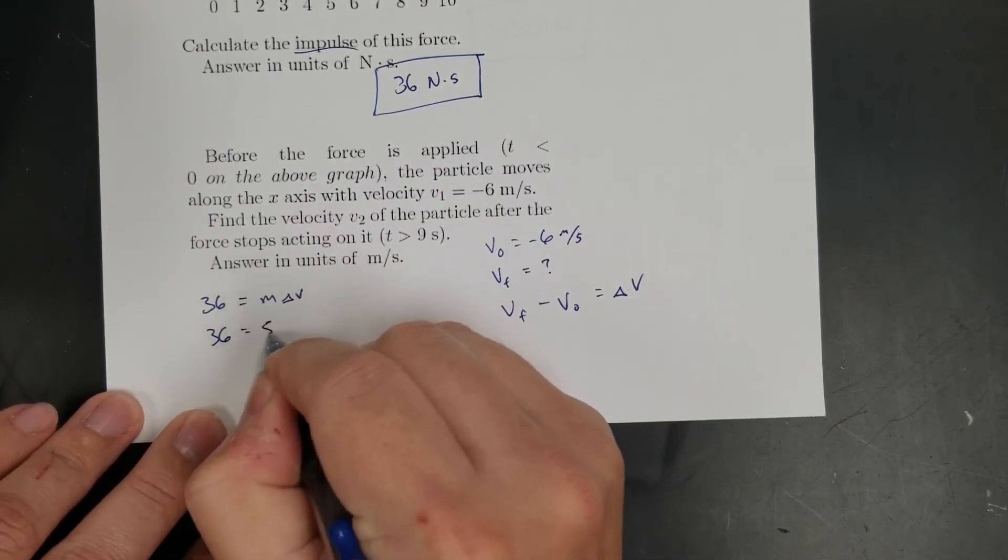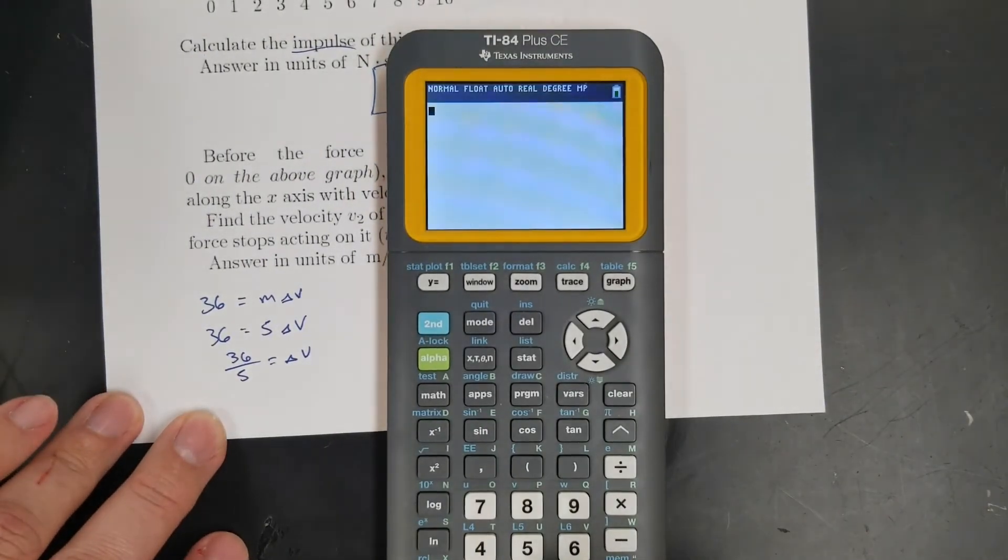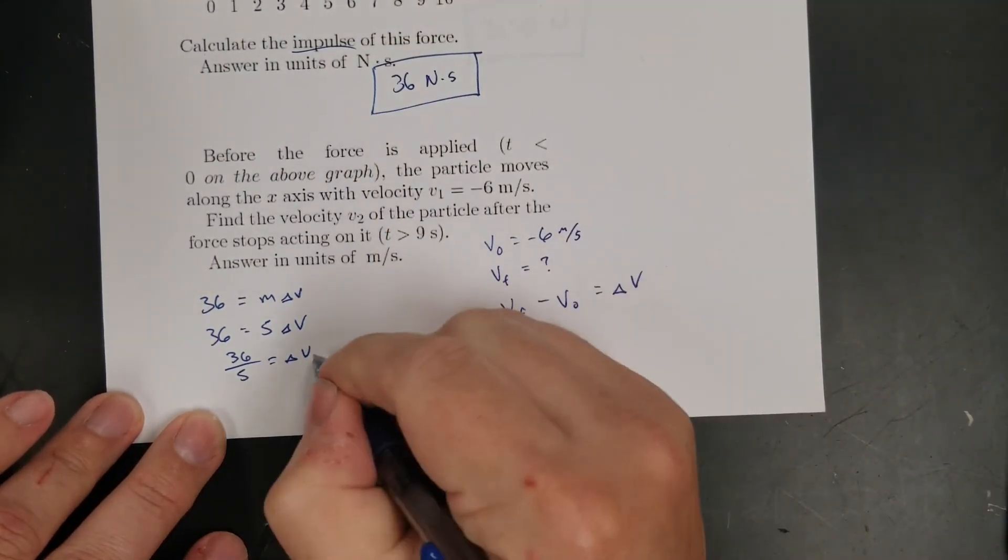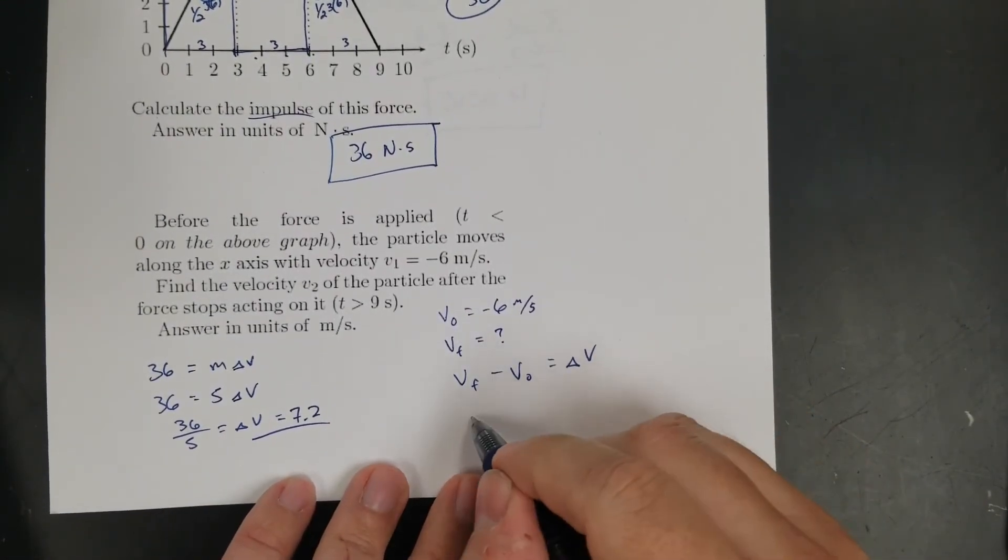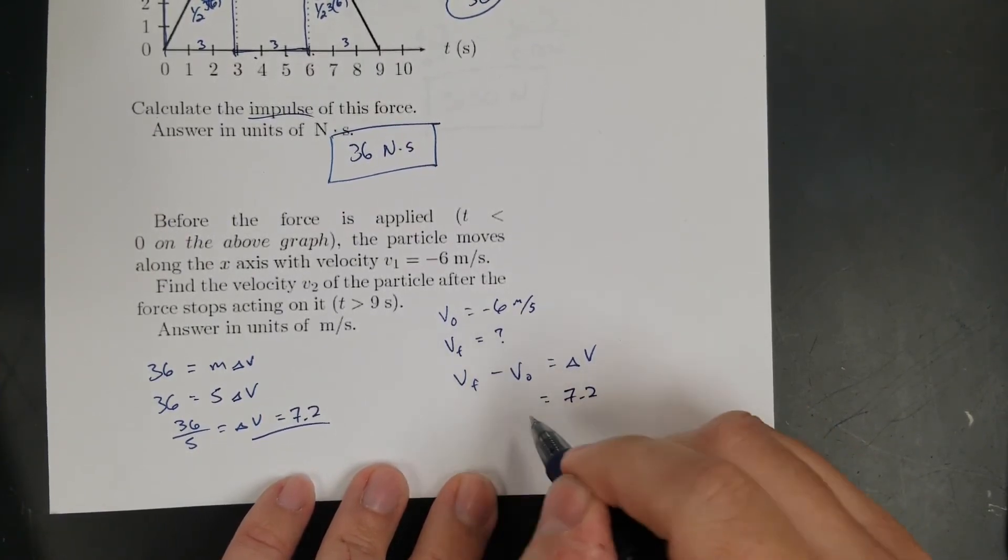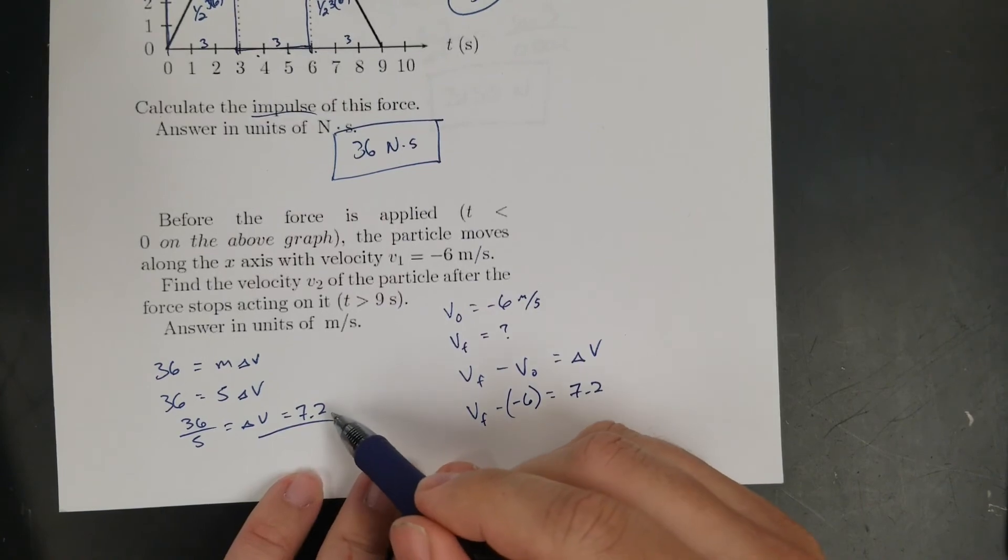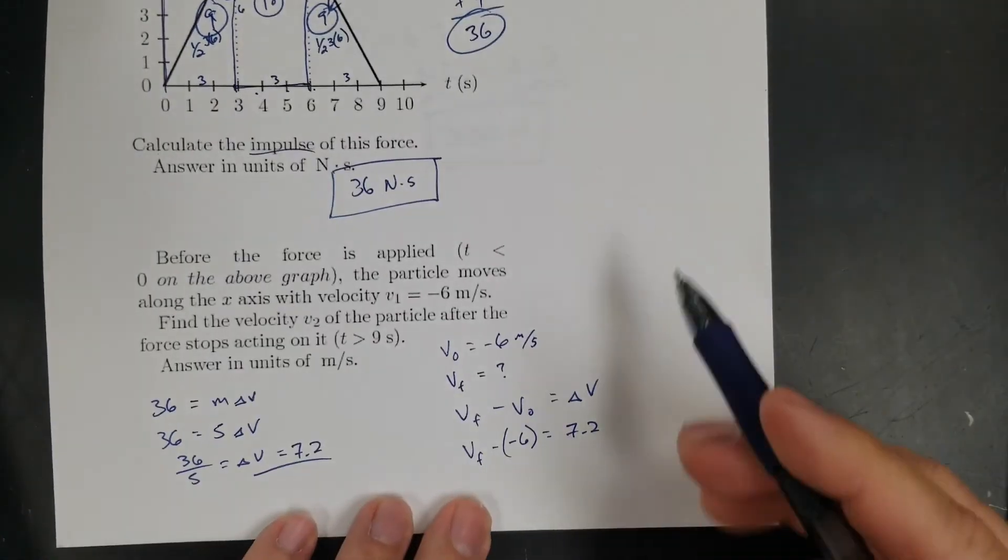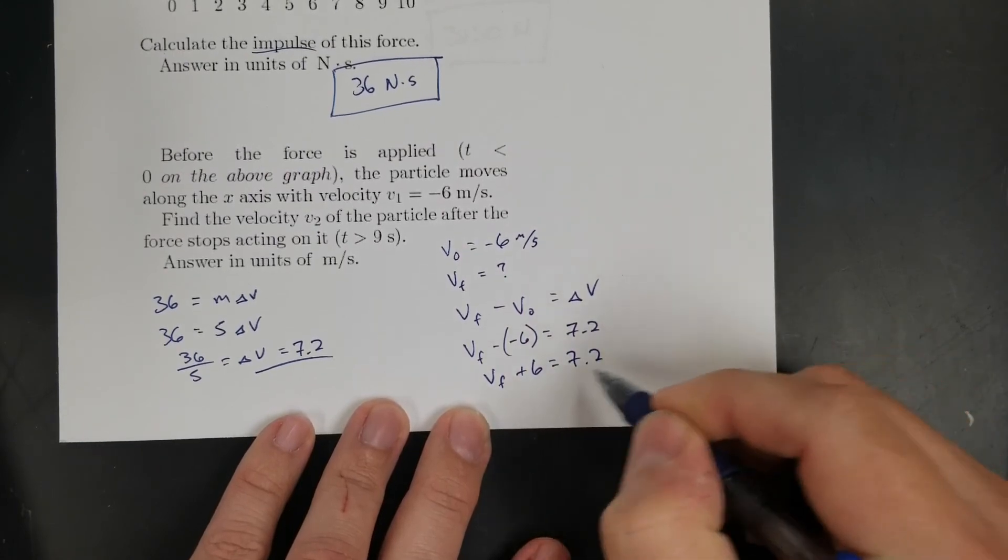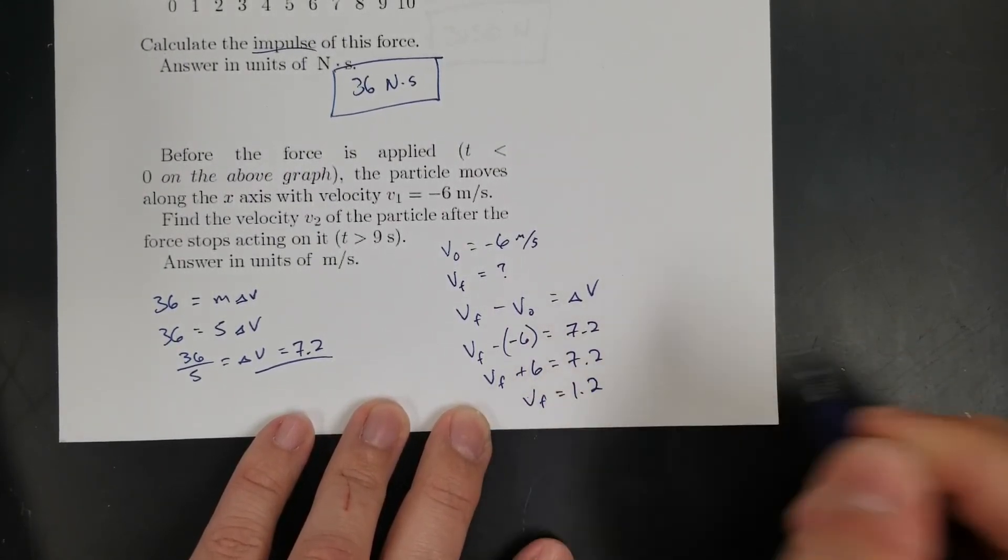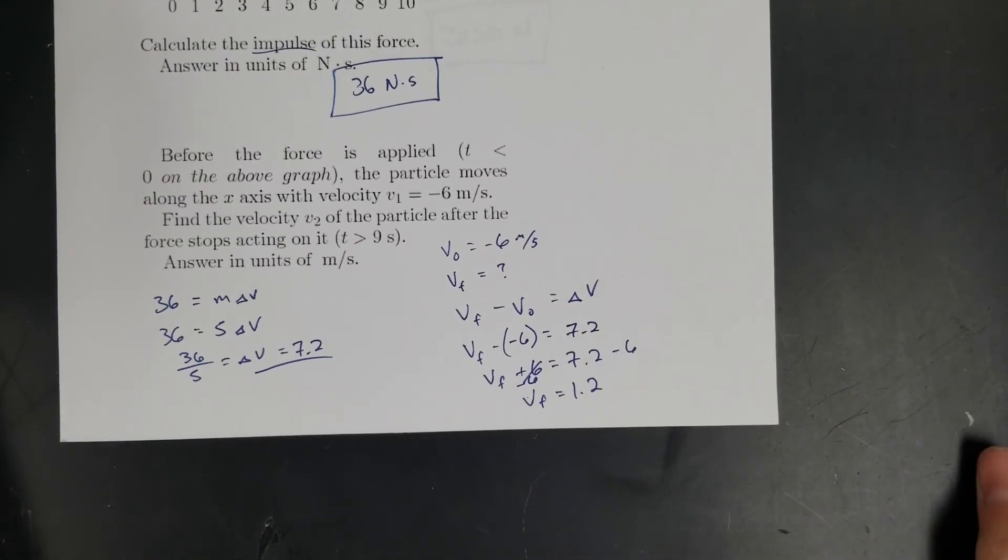So 36 equals five delta V. So 36 divided by five will give me delta V. So 36 divided by five, 7.2. Okay, so I'm going to come over here. So delta V is 7.2. So 7.2 is equal to my final minus my initial, which is negative six. Right? Because I ended up with a positive number, because that was a positive area. Yeah. Yeah. Okay. So that becomes VF plus six equals 7.2, right? So 7.2 minus six. So that means VF has to be 1.2, right? Because if I subtract six over 7.2 minus six, 1.2. Bam. Meters per second.